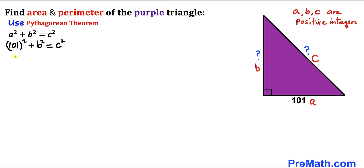Let's simplify. That gives us 10,201 + b² = c².